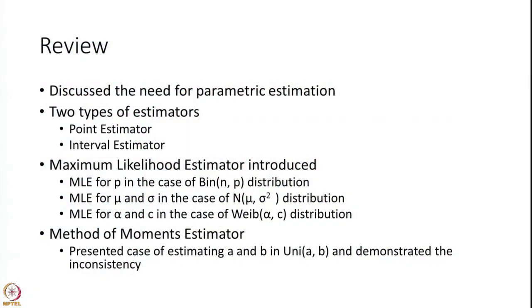Let us recall that we discussed in detail the need for parametric estimation. The need is that you have an unknown population — you know it follows a certain distribution with some unknown parameters. It follows a distribution F with an unknown parameter theta. If we know theta, we know the distribution, and therefore we know the population. Our effort is to estimate the parameter theta.